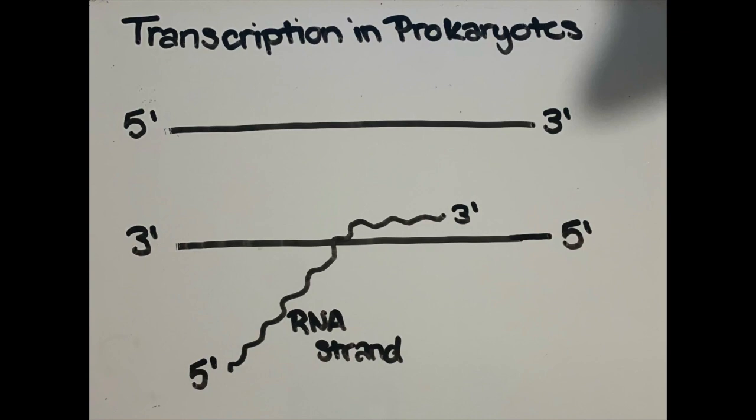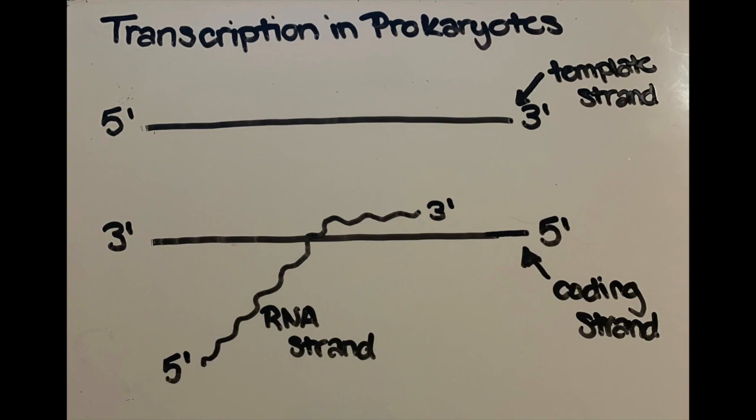I'm going to show how to identify the coding strand and the template strand. Since transcription goes to the right and RNA transcribes from 5' to 3', the coding strand is identical to the RNA sequence, and the bottom strand is the template strand because it is complementary to the RNA sequence. This bottom strand is what nucleotides are built off of.